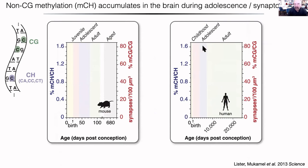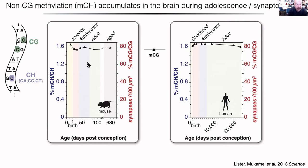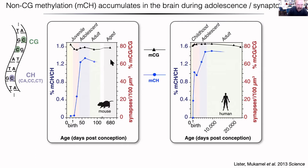I want to describe more recent studies in our group focused on the brain and particularly on the role of non-CG methylation in cell identity. Shown here on the left is a cartoon of CG symmetrical methylation and asymmetric CH or CA methylation, largely in a CA context. CG methylation is very dynamic during fetal development and also dynamic after birth, but gains and losses normalize out in absolute level. Whereas non-CG methylation, although it exists in fetal stages, is a fraction of what it accumulates to in adult tissues.